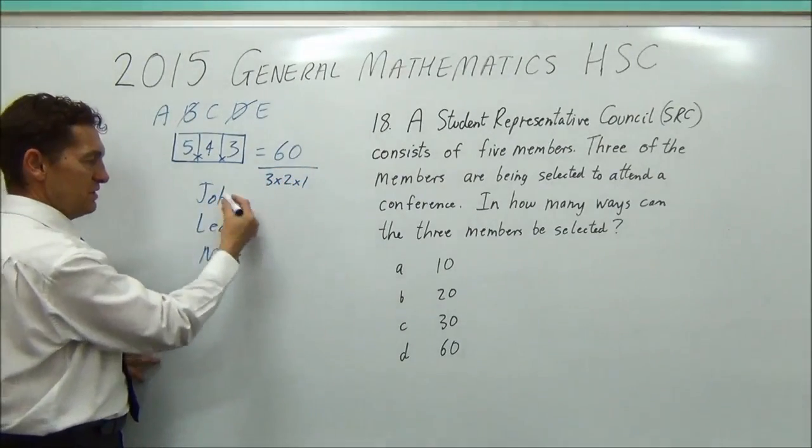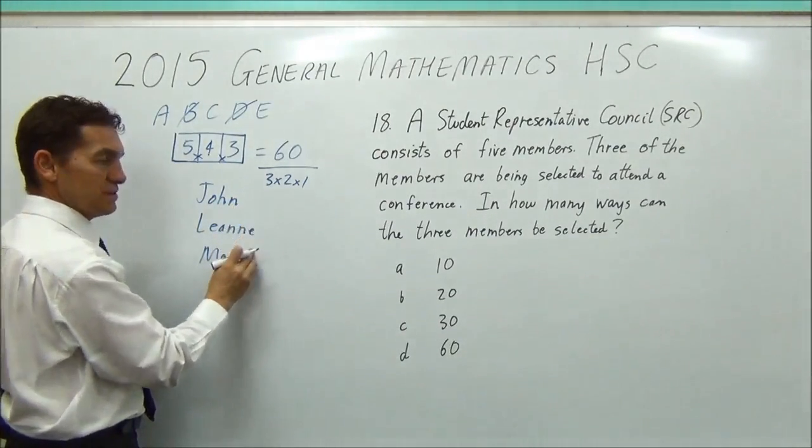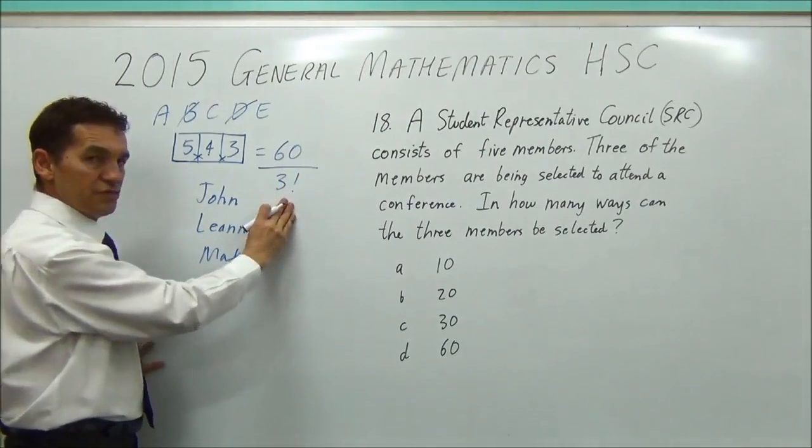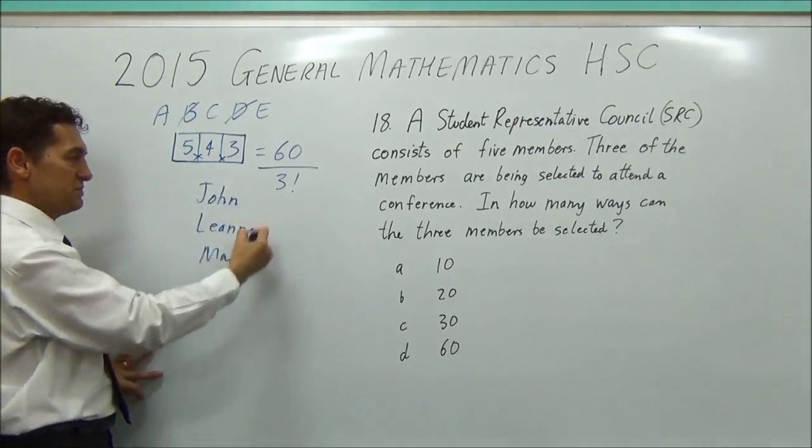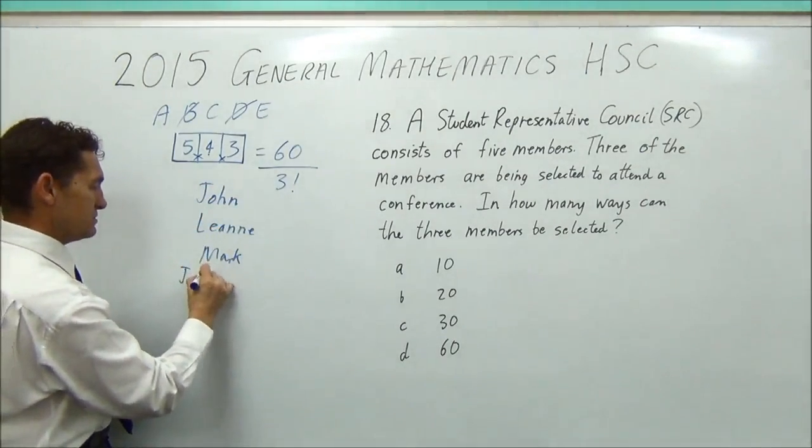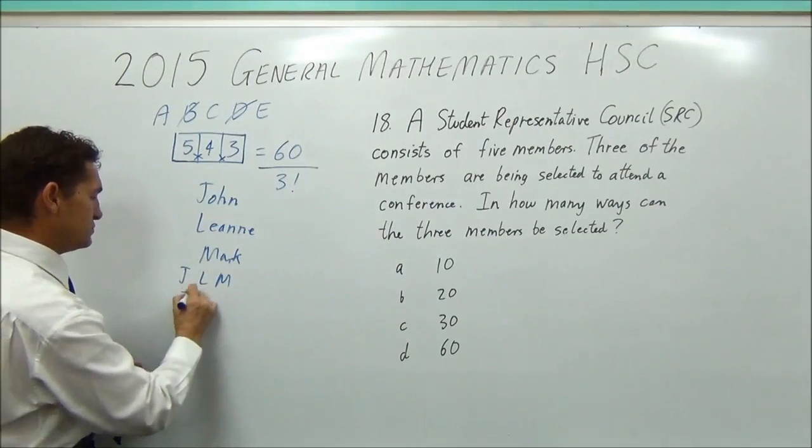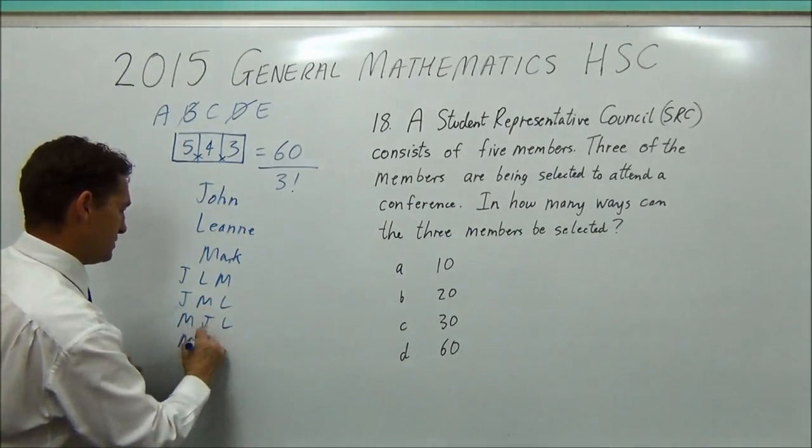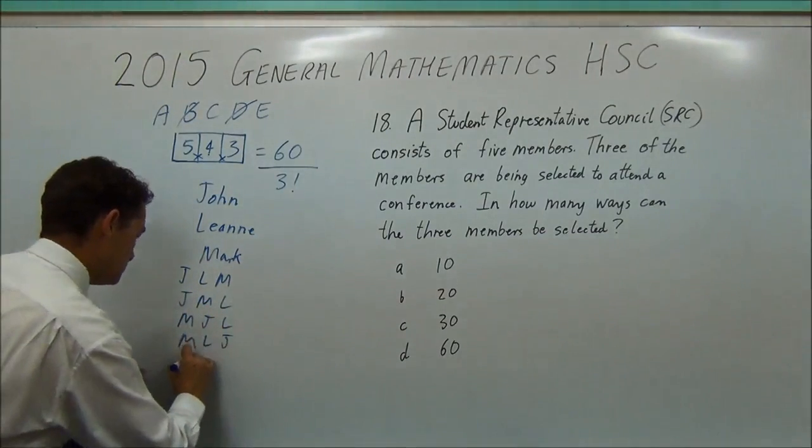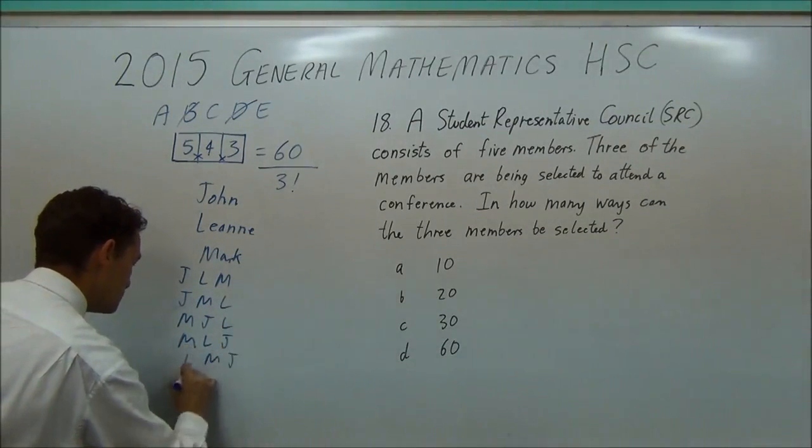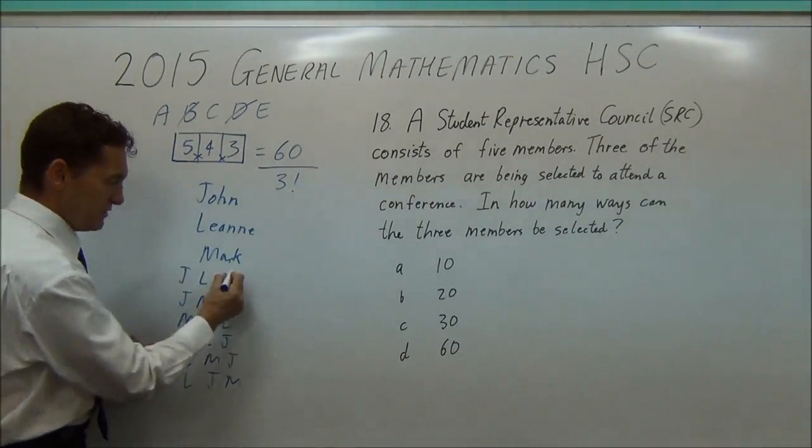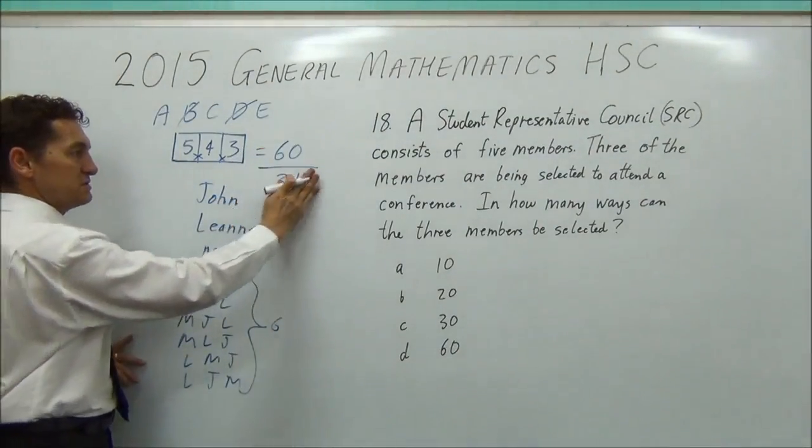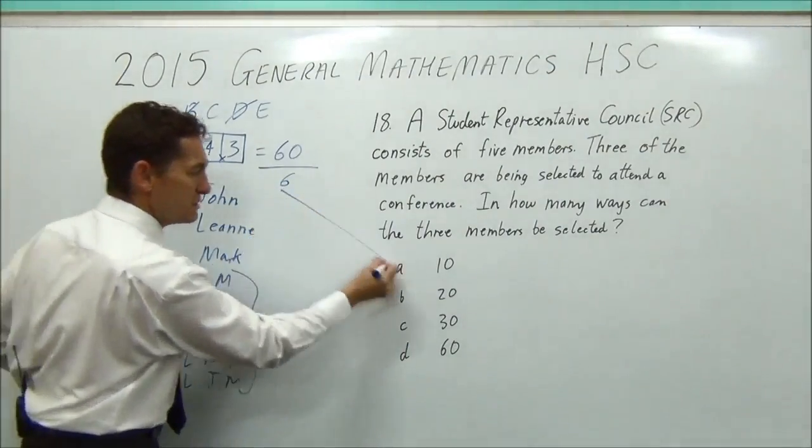So in that case, you should divide by three times two times one. Because I could pick each of these to fill these gaps in three, then two, then one way. So you're really dividing sixty by six. Or, if you learned it another way, three factorial. Because that's the number of ways you can change around John, Leanne, and Mark. So you could have had them in each of those ways. And there's six different ways I could have had the same people. So that divided by six, so three factorial is six, gives me ten.